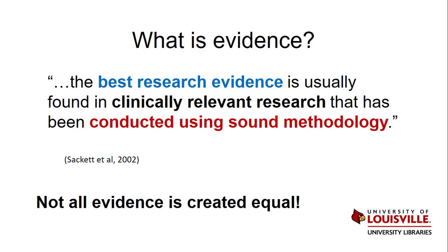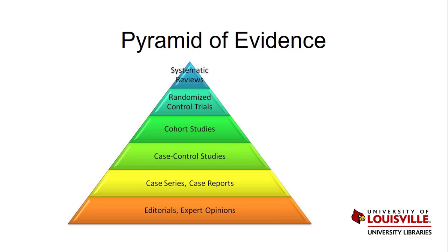In other words, not all evidence is created equal. There are different levels of evidence. To illustrate this concept, let's look at the pyramid of evidence. This pyramid is used to rank the levels of evidence based on their reliability and quality, with the top point containing the highest level and the bottom rung containing the lowest.